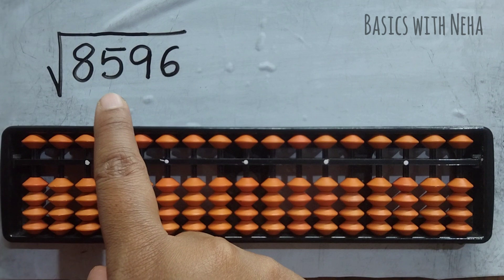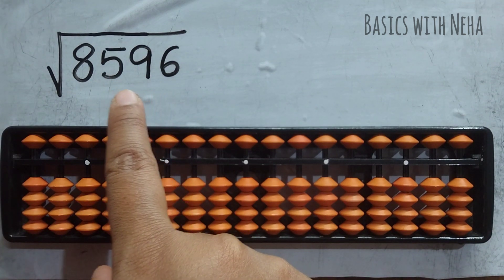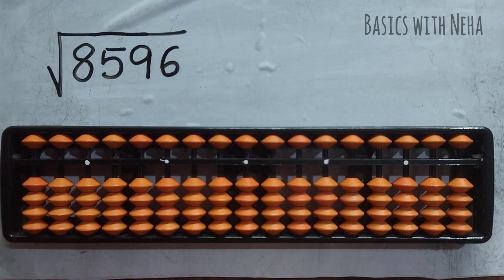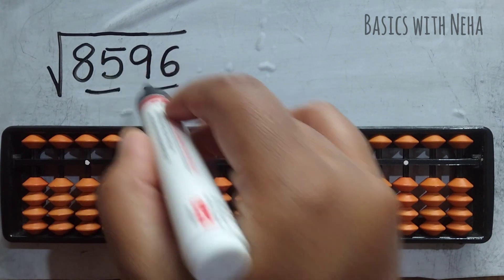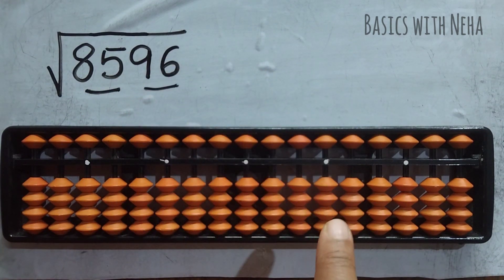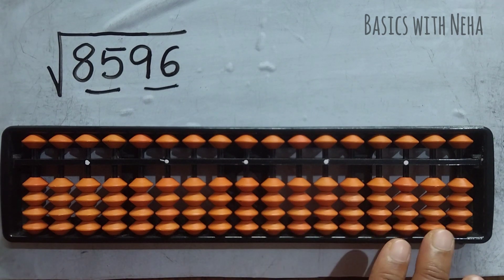When we have to do the square root, we should always group the numbers in two from the right side. So 96 will be one group and 85 will be another group, and we have to place this question on the tool on the right side.